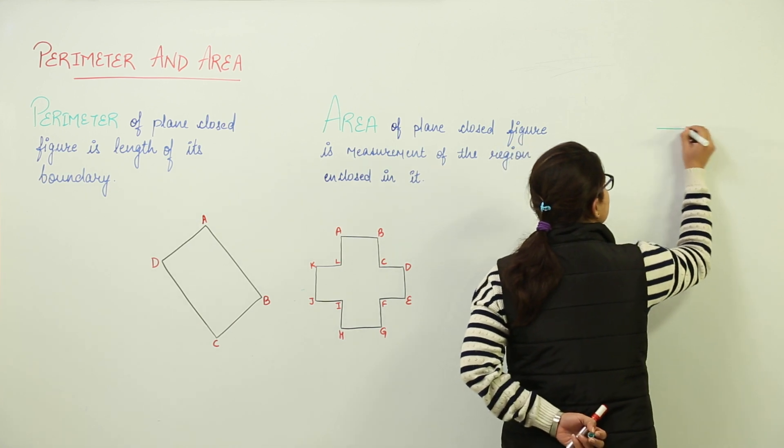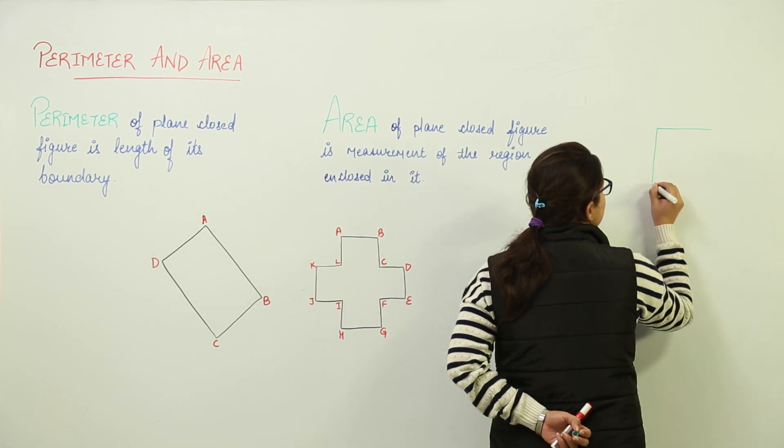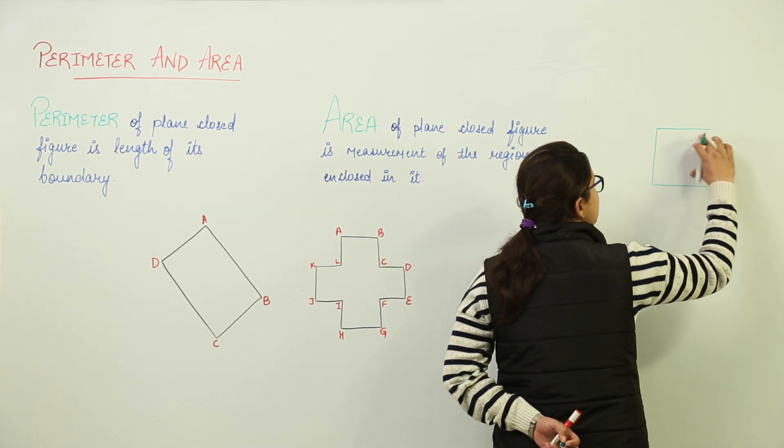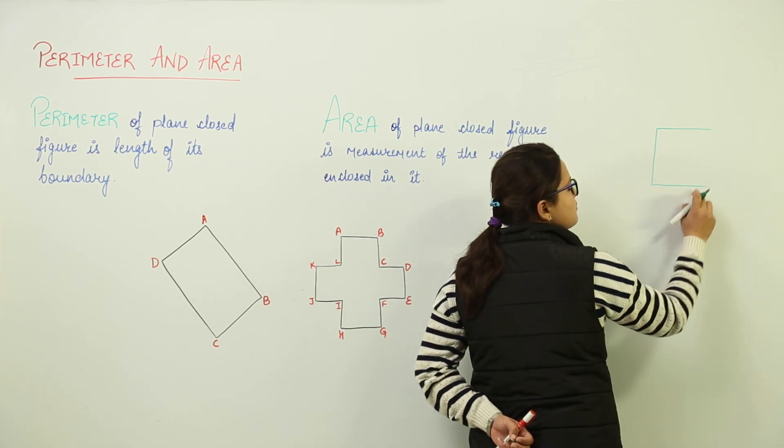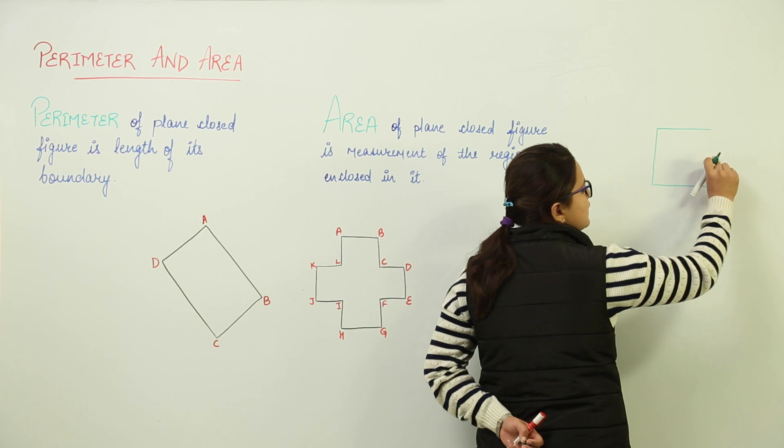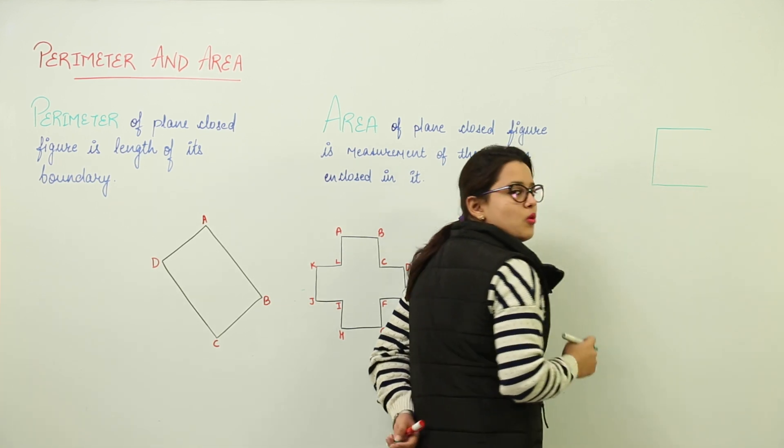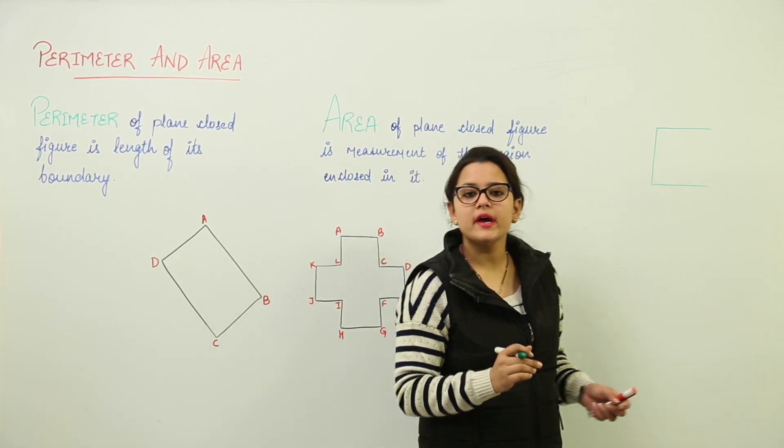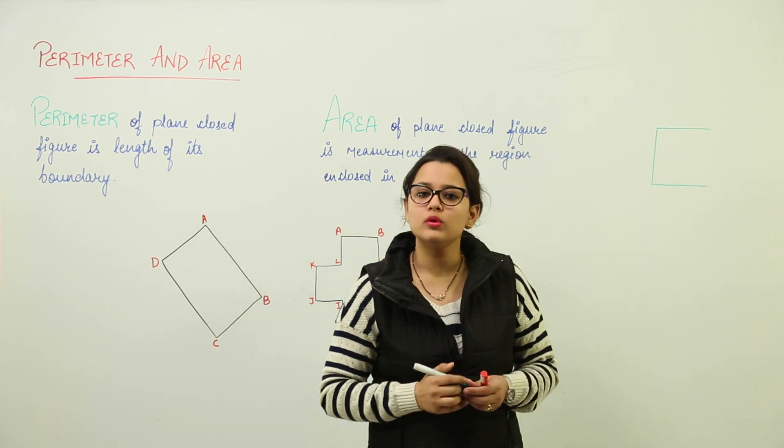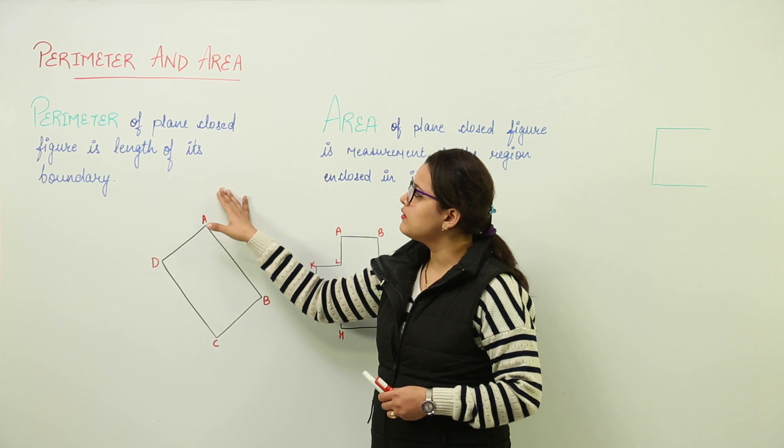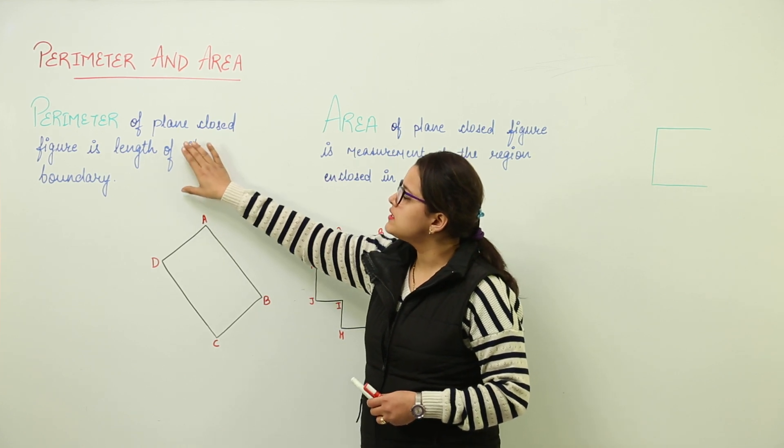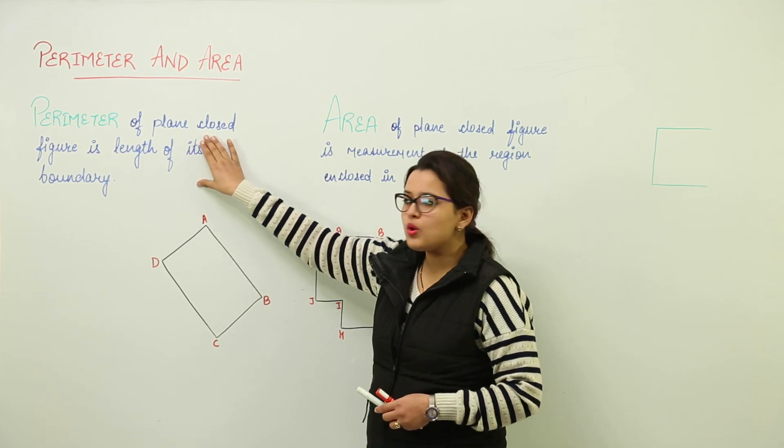For example, all the sides of this shape, you can check here. All the sides are not meeting at a point. Here, this side and this side particularly are not meeting at any point. That means this is an open shape. So, we define perimeter and area only for closed figures. That is why I have made the definition like this.